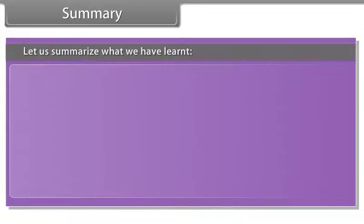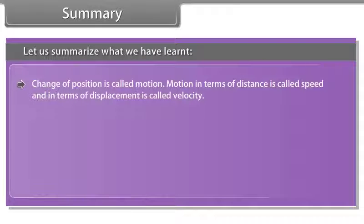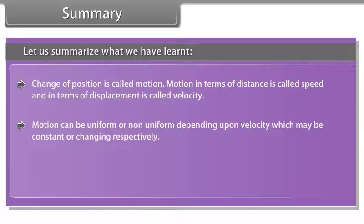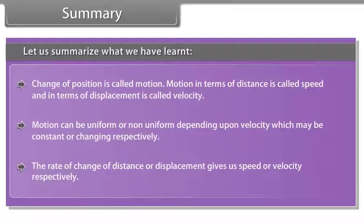Summary: Change of position is called motion. Motion in terms of distance is called speed, and in terms of displacement is called velocity. Motion can be uniform or non-uniform depending upon velocity, which may be constant or changing respectively. The rate of change of distance or displacement gives speed or velocity respectively.